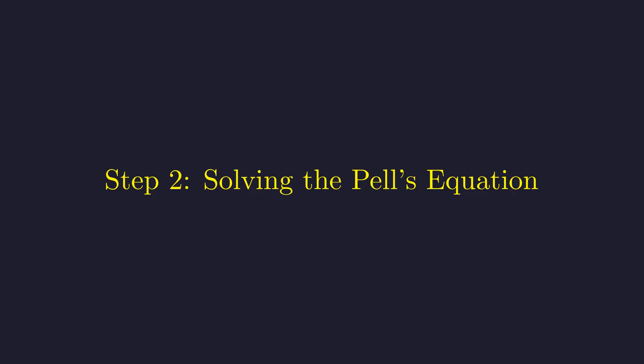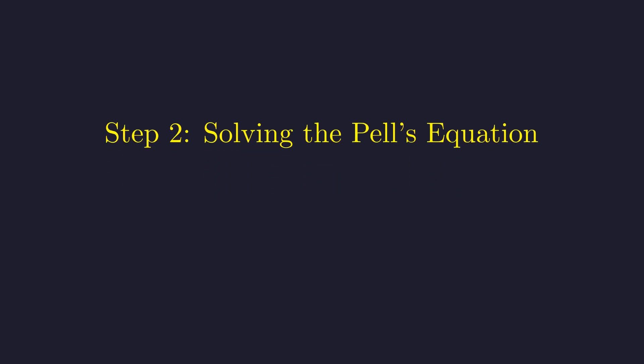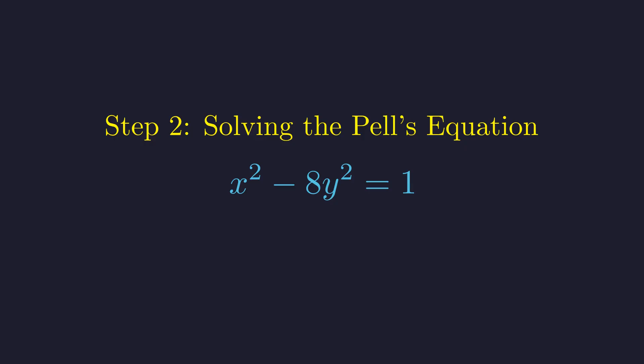Pell's equations have a well-known method of solution. We must first find the smallest non-trivial integer solution, known as the fundamental solution. We are looking for integers x and y that satisfy this. By inspection, if y equals 0, x squared equals 1, so x equals 1. This is the trivial solution.